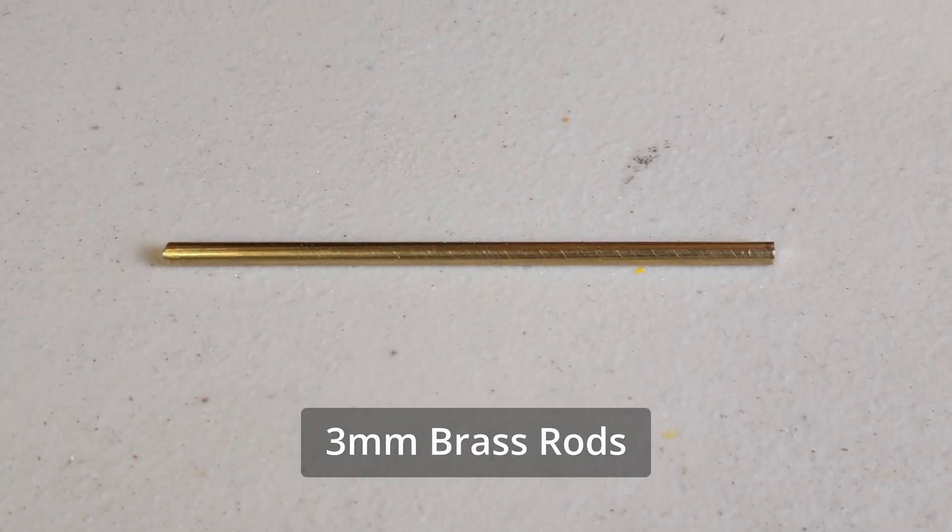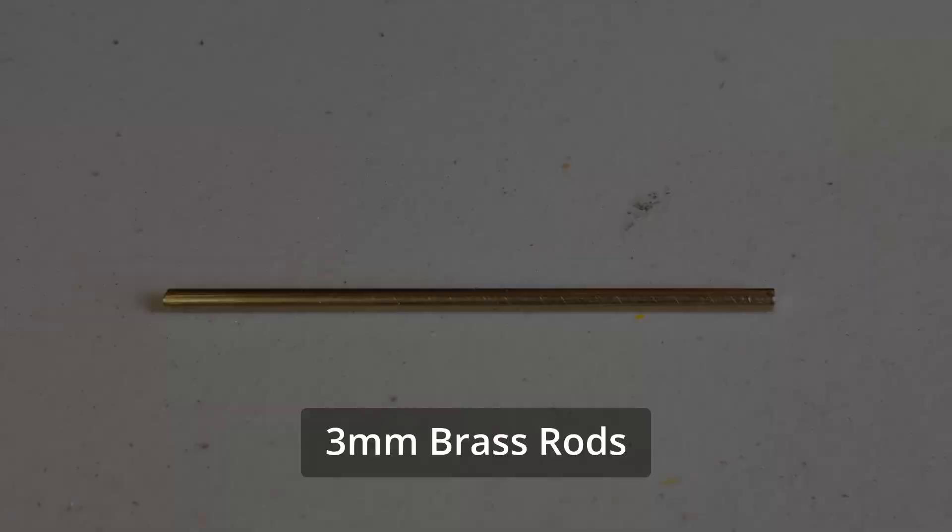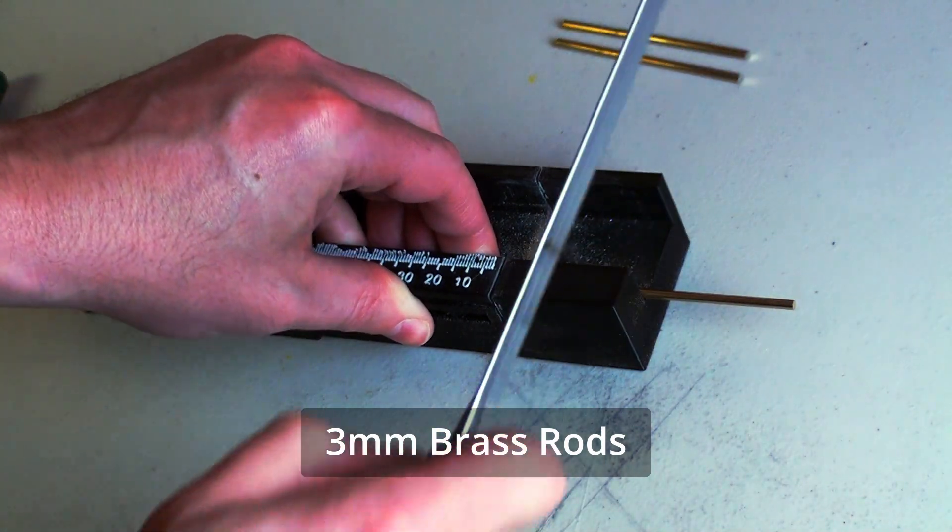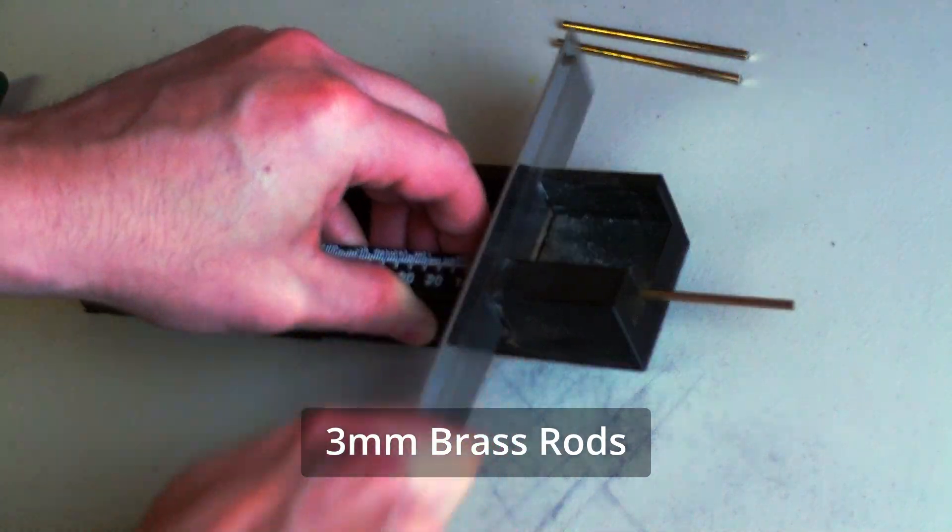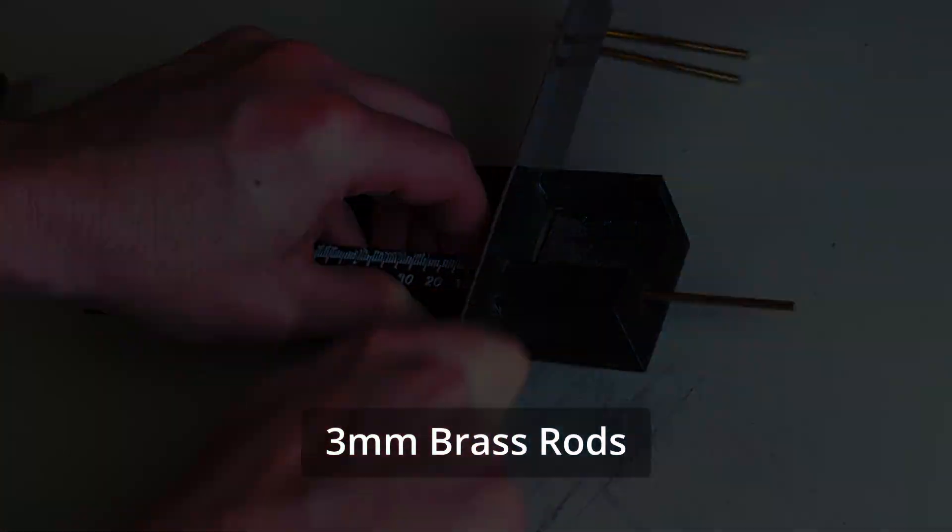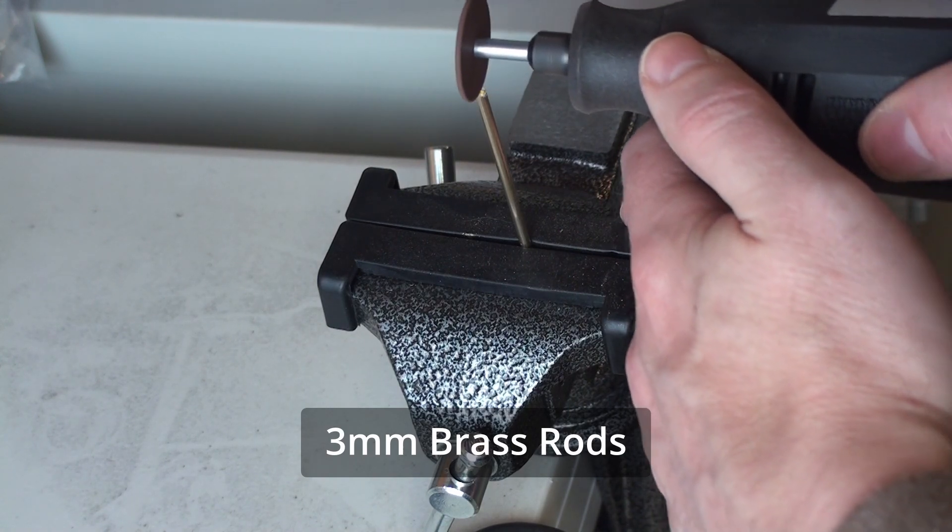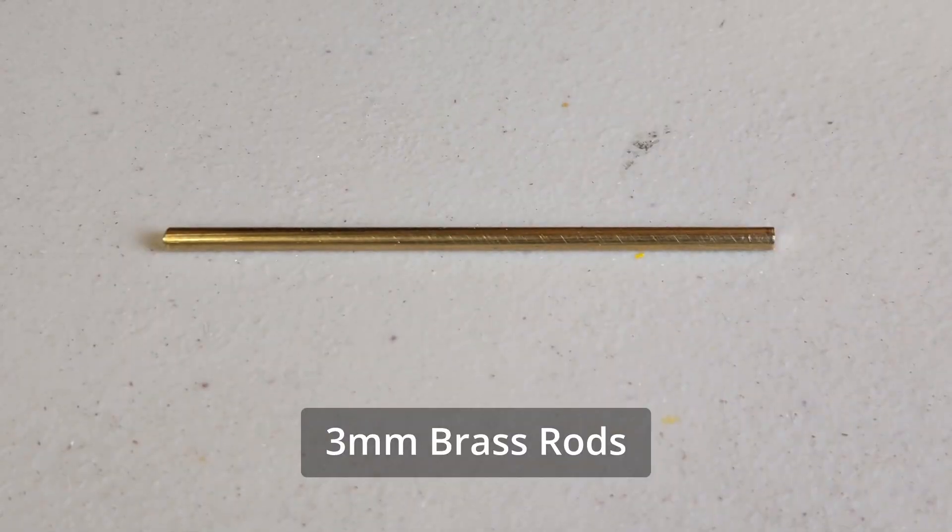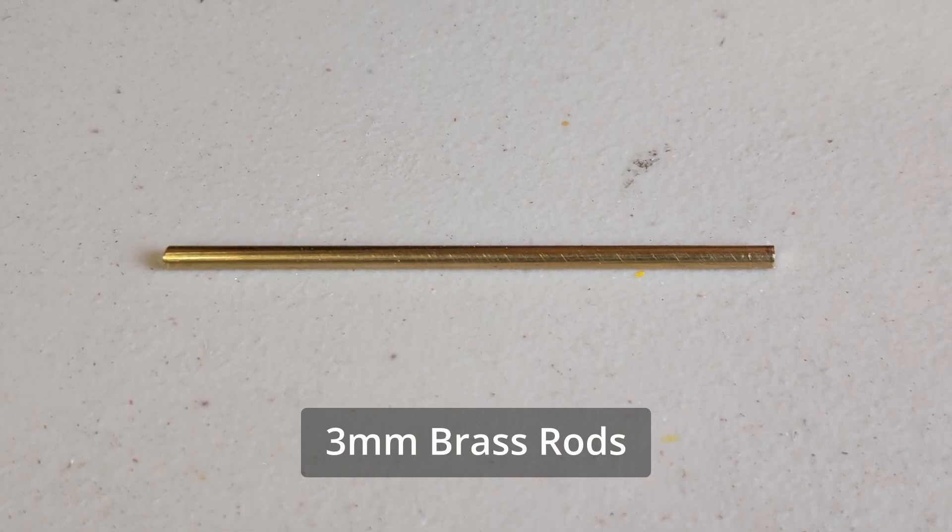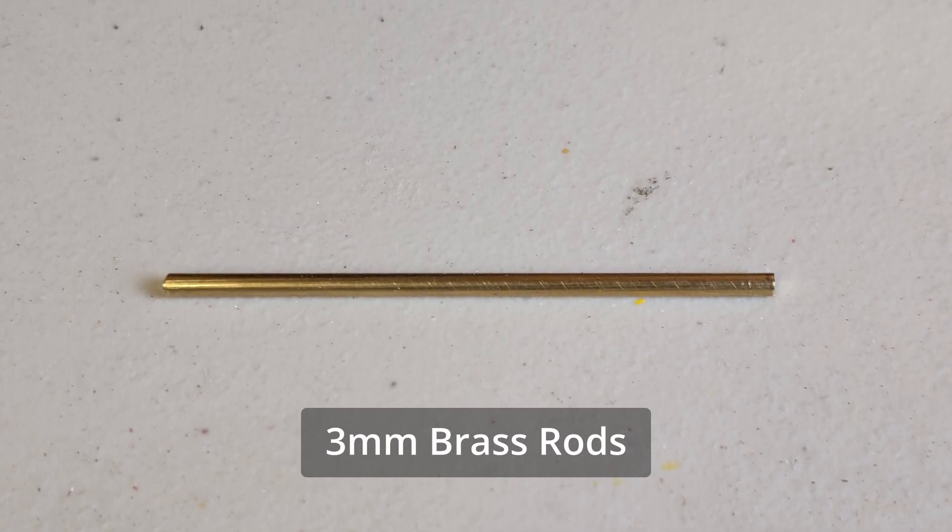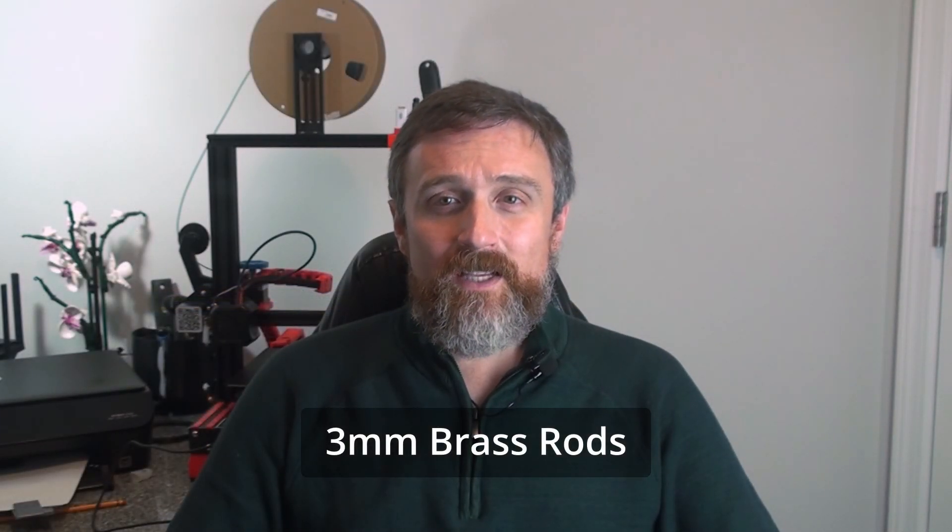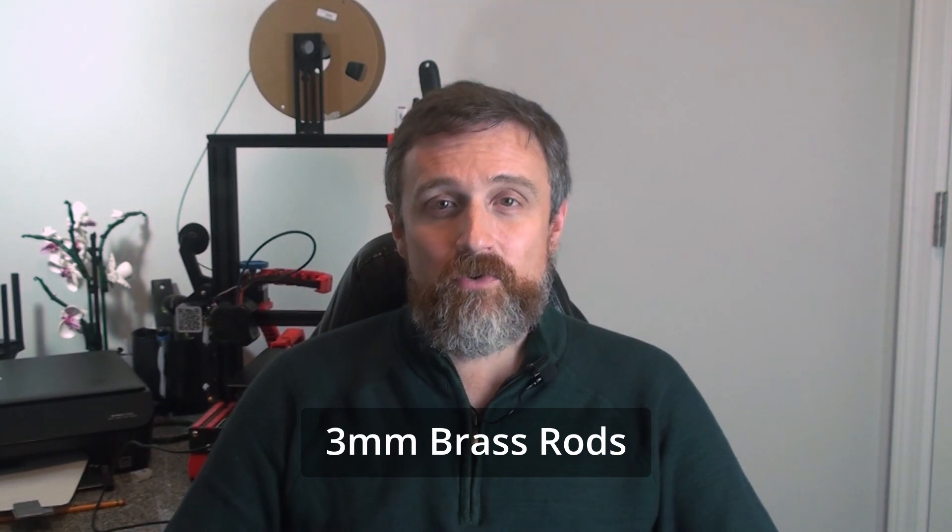You'll also need another small piece of 5/16 inch steel at 20 millimeters for the weight shell pulley. You'll need five 3 millimeter brass rods cut to around 68 millimeters in length for most of the axles. You'll need one of those 3 millimeter brass rods then cut to 88 millimeters for the minute hand.